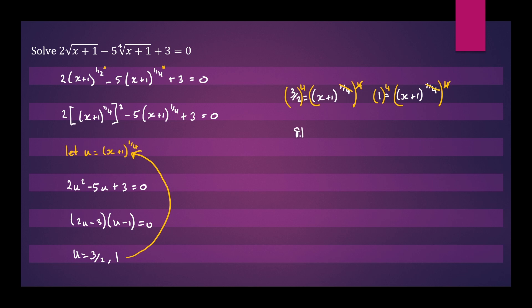So we are going to have 81 over 16 equals x plus 1 and this is 1 equals x plus 1. Therefore x will equal 65 over 16 and in this case x will equal 0.